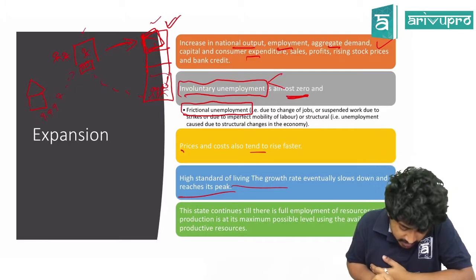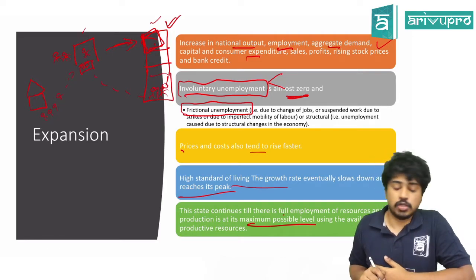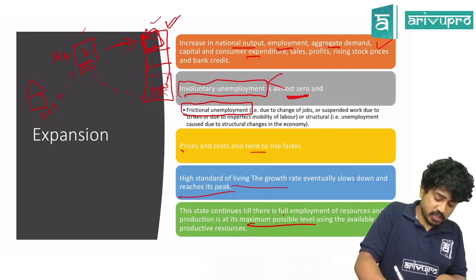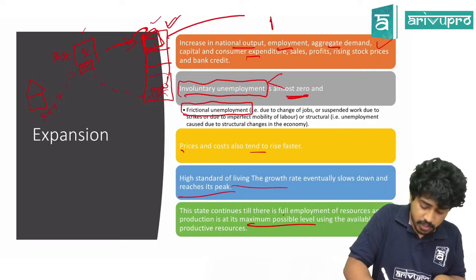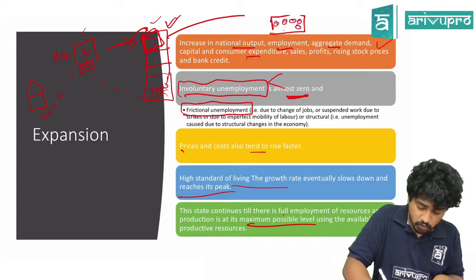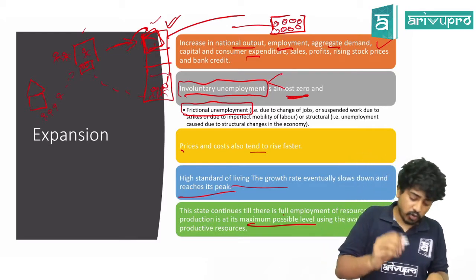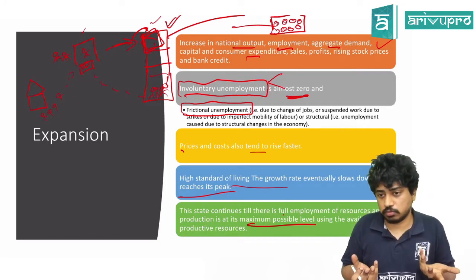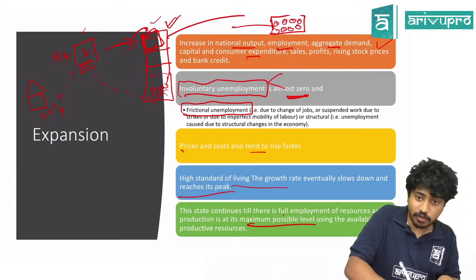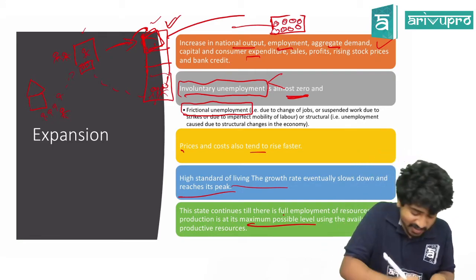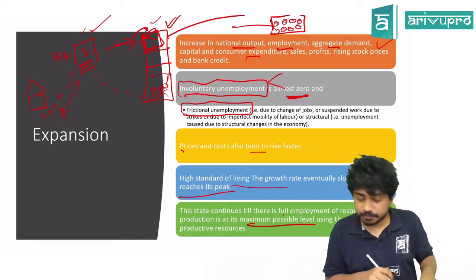This state continues till there is full employment of resources and production is at the maximum possible level using available resources. The agriculture land is producing almost everything — giving it to the corporate, who gives it to the cheta. Employees getting more money will spend more. One student's dad got a promotion — he'll give a treat for coffee or tea. More money spent — good for everyone.